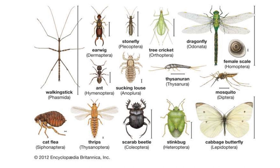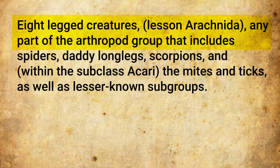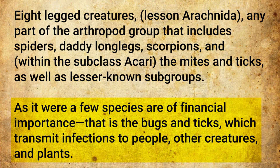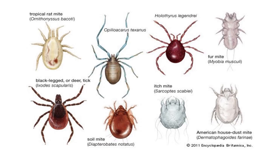They are eight-legged creatures — any part of the arthropod group that includes spiders, daddy long legs, scorpions, and mites and ticks, as well as lesser known subgroups. A few species are of medical importance, such as bugs and ticks, which transmit infections to people, other creatures and plants. Here we have pictures showing a number of mites — soil mites, itch mites, and different types.